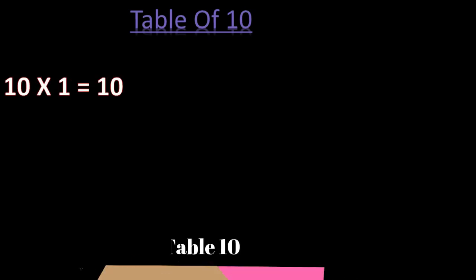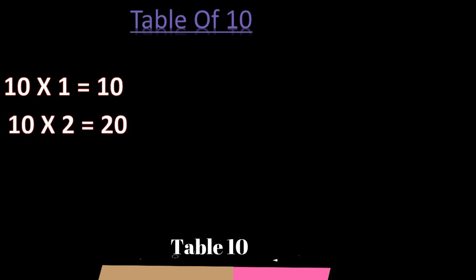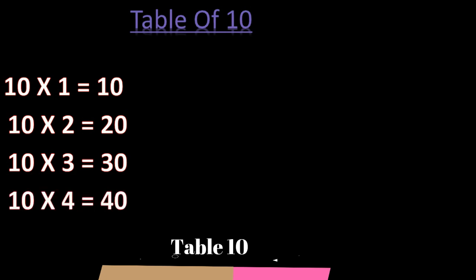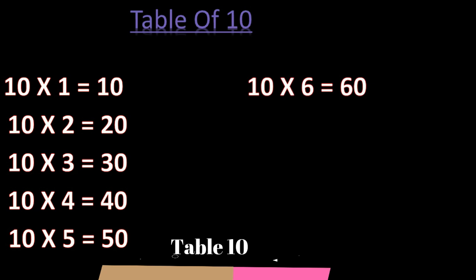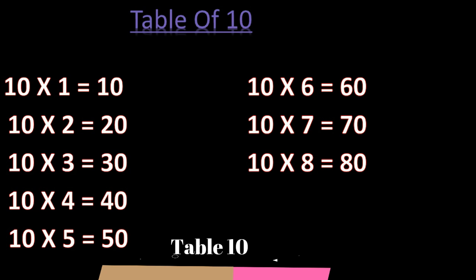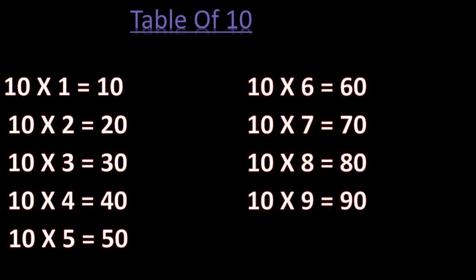Table of 10. 10 ones are 10. 10 twos are 20. 10 threes are 30. 10 fours are 40. 10 fives are 50. 10 sixes are 60. 10 sevens are 70. 10 eights are 80. 10 nines are 90. 10 tens are 100.